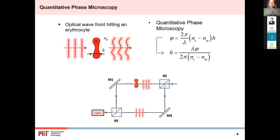The idea of how to measure red blood cell membrane fluctuation is by doing phase microscopy based on interference. If the red blood cell has a certain shape, when an optical plane wave passes through it, the wavefront would be deformed by the cell shape. The problem is that wavefront deformation does not change the intensity, so we need to use an interferometric measurement to convert the phase changes of the wavefront into intensity changes that we can measure.